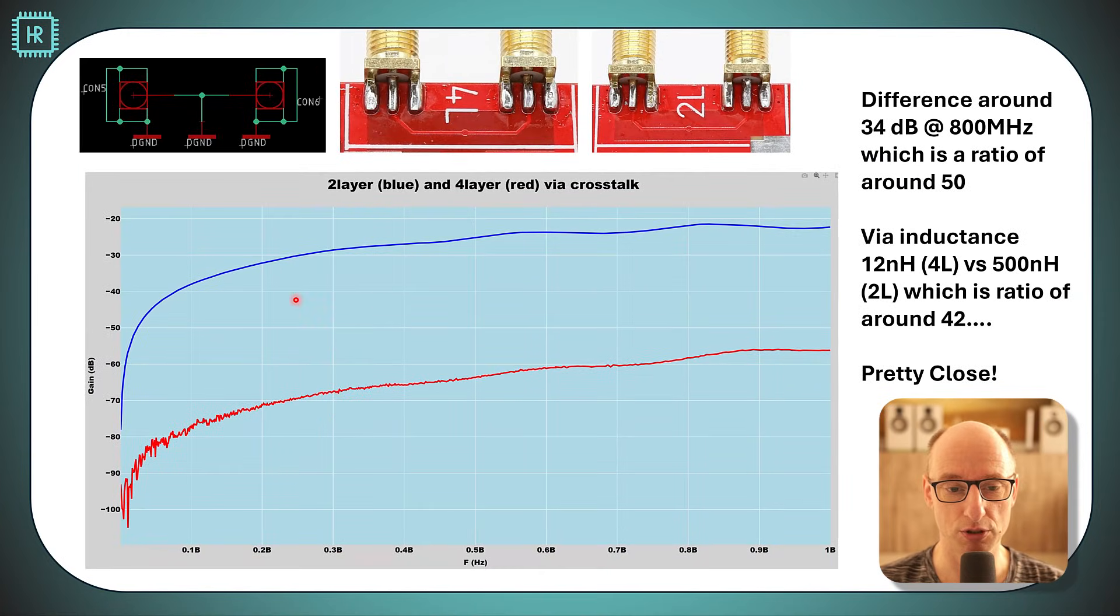So these are the measurement results. Since this VIA is not ideal and it has an inductance the suppression will not be infinite. If this were an ideal VIA then you would basically have minus infinity gain over the whole frequency range from 0 gigahertz to 1 gigahertz. However, you can see the blue line which is a two layer which has quite a lot of impedance which means there's pretty much cross talk.